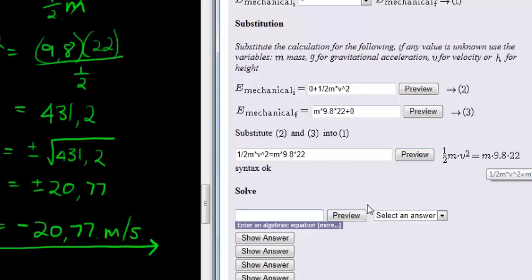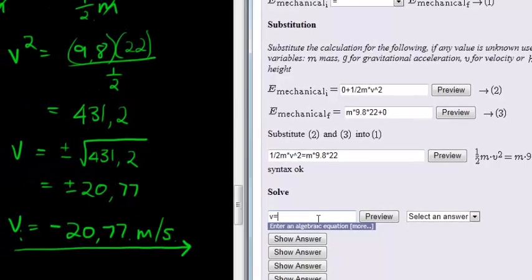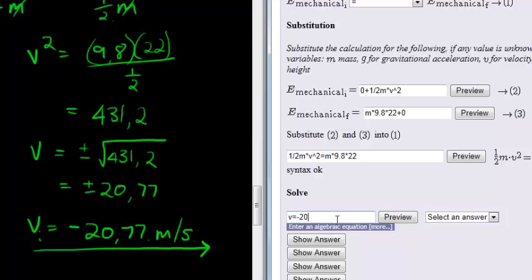That's good. And then, when we solved V, we found that velocity was equal to negative 20.77 meters per second.